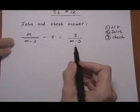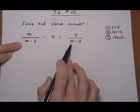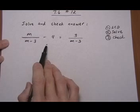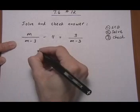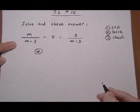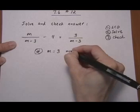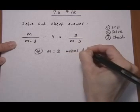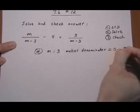Now the first thing I would notice about this one is that there are variables in the denominator. As soon as I see variables in the denominator, I look to see what value of the variable will make the denominator equal zero. And then I make a note to myself. m equals 3 makes denominator equal to zero.